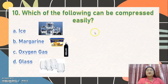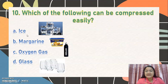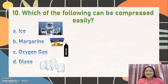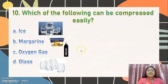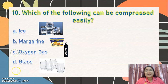Number 10, the last one: which of the following can be compressed easily? Letter A, ice. Letter B, margarine. Letter C, oxygen gas. Or letter D, glass? The correct answer is letter C, oxygen gas. That's it for today. I'll see you next week. Bye-bye.